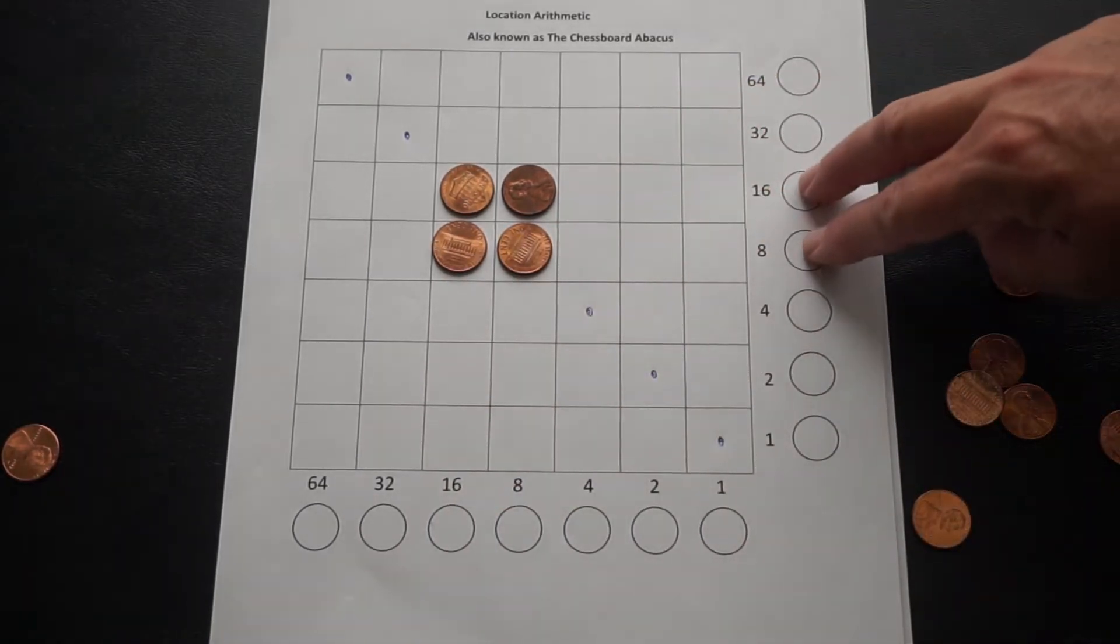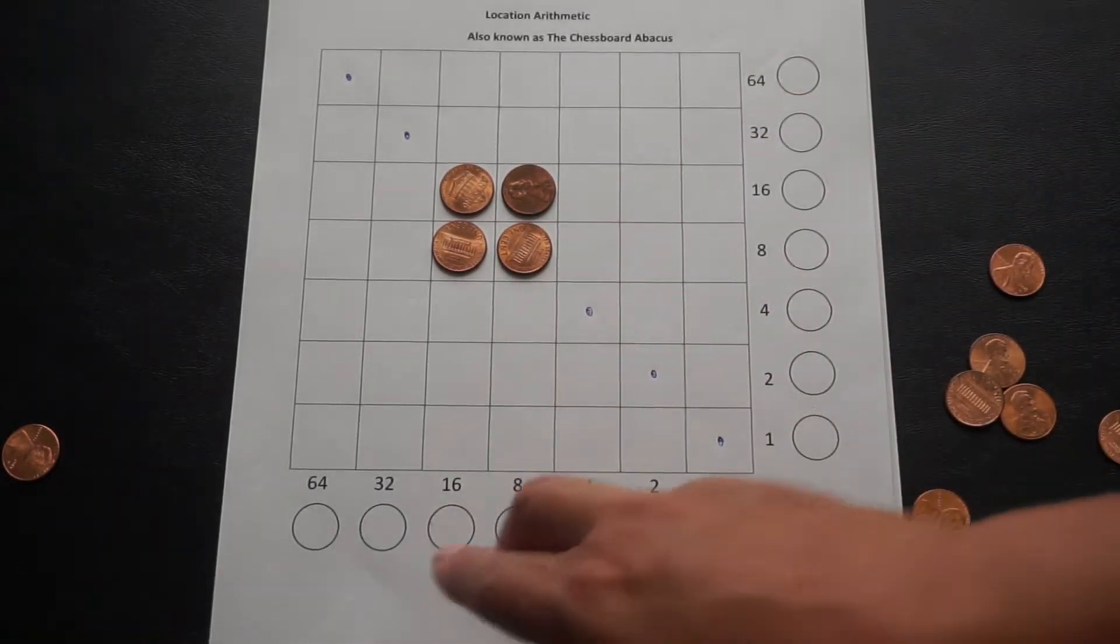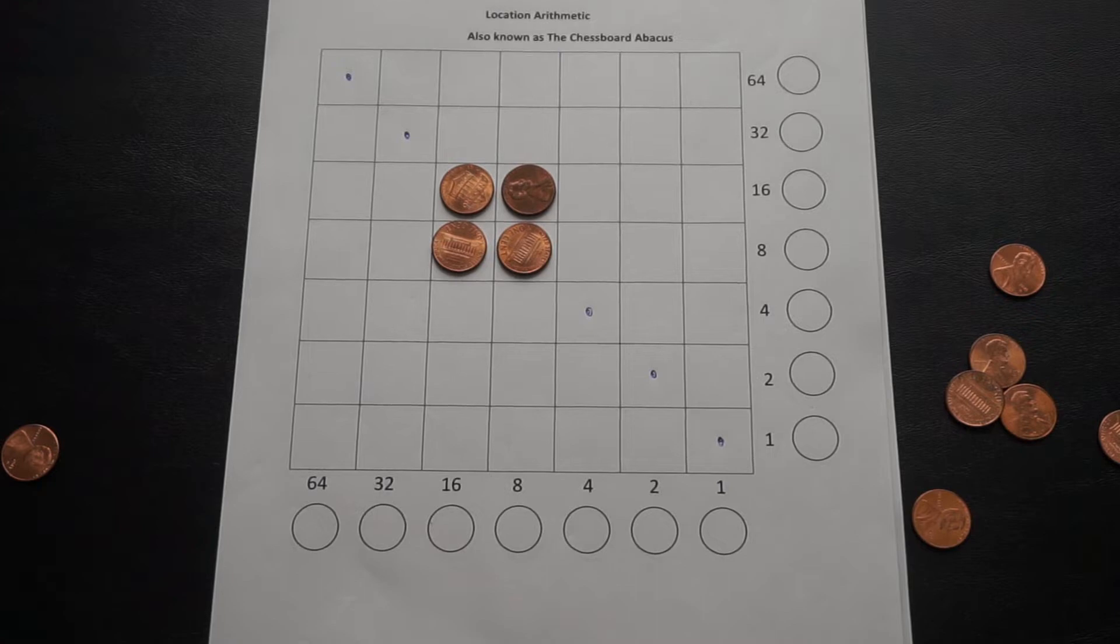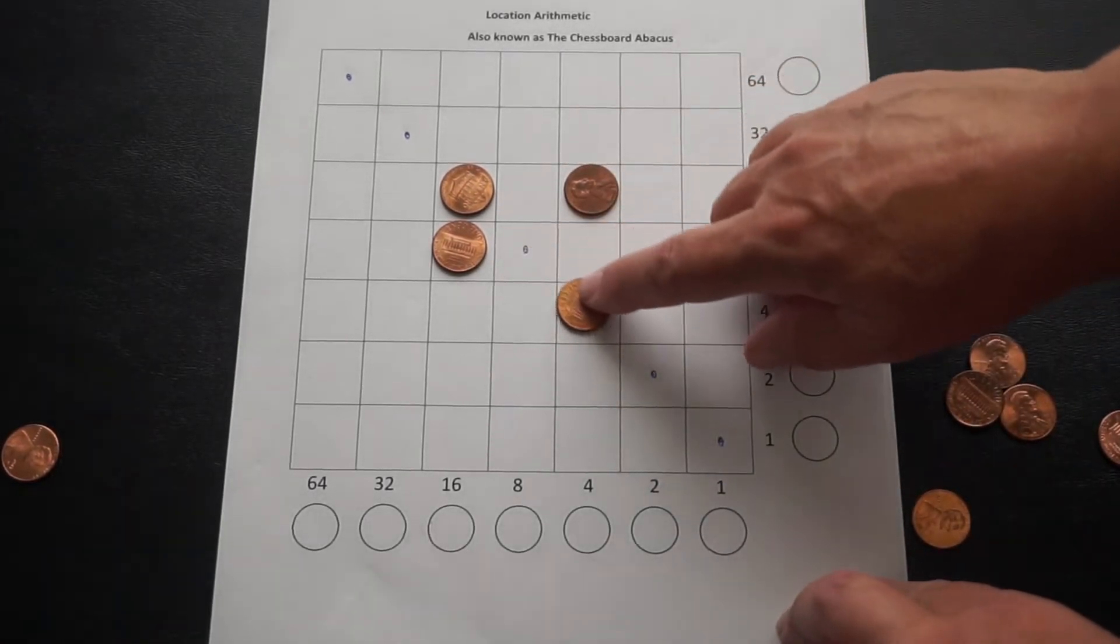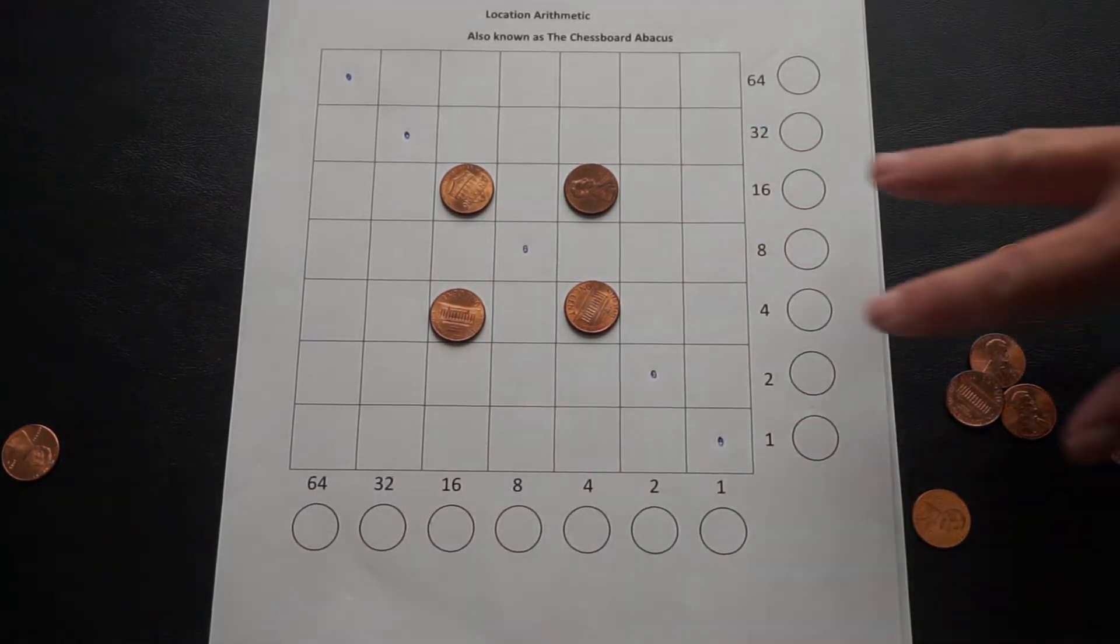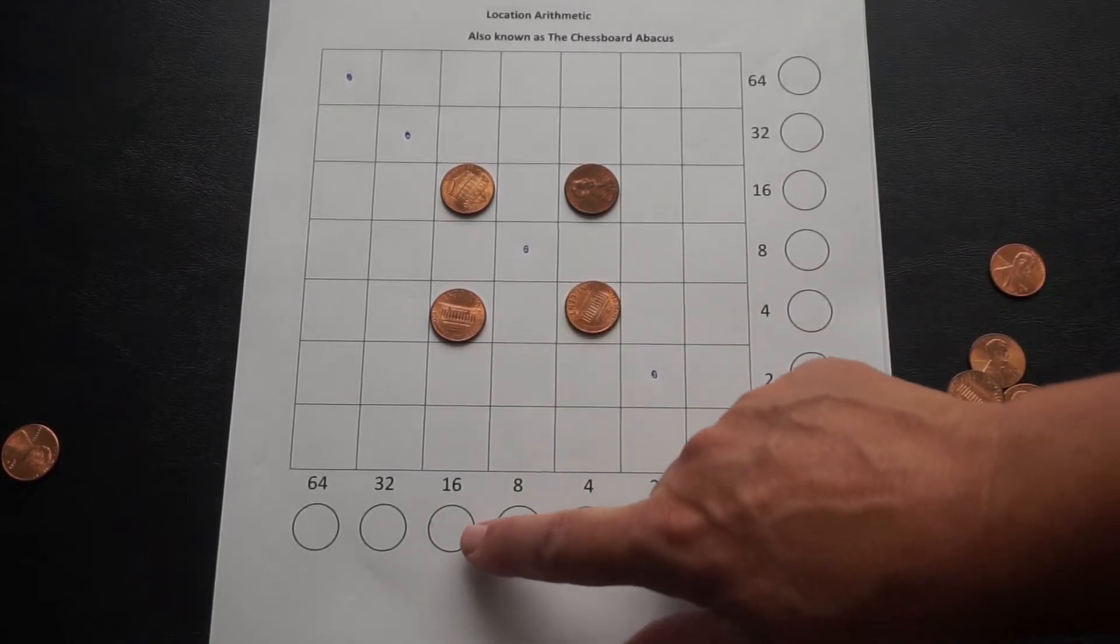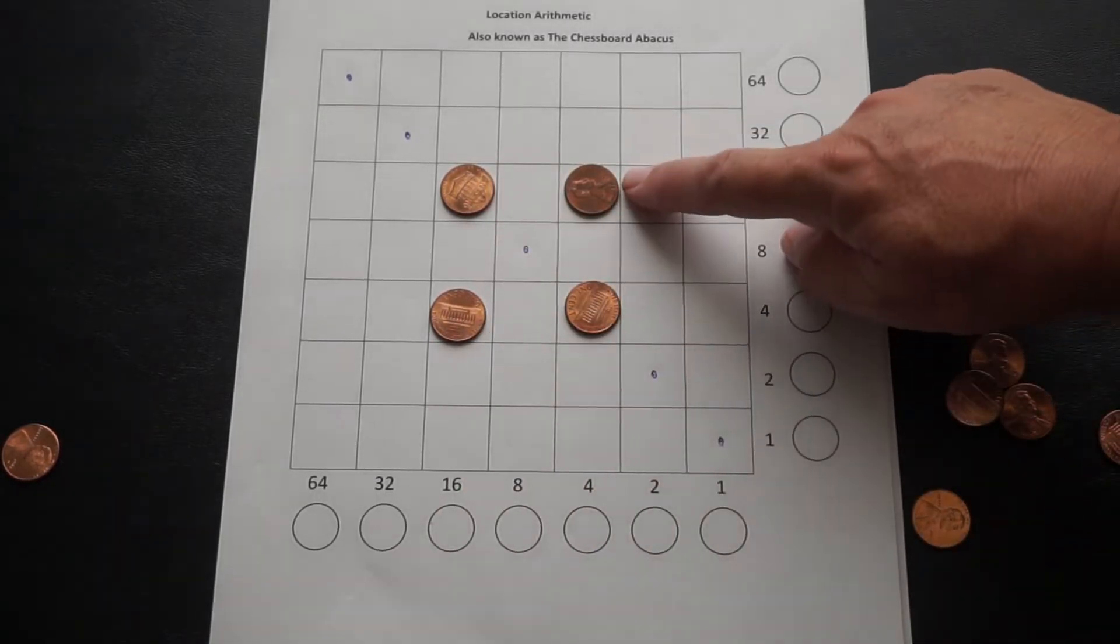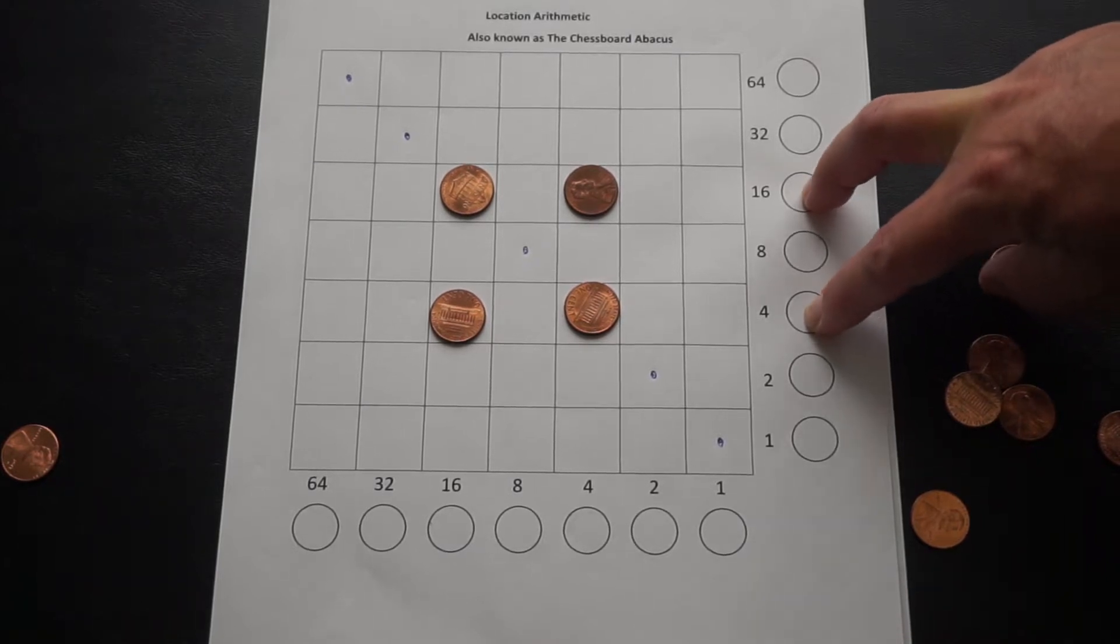So here we have 24, 16 plus 8, times 24. So it needs to look like a square. Now it doesn't have to be all pushed together like that. We can actually have a square where there's some space between the pieces. So this one represents 20 times 20, because we're in the 16 column and the 4 column. Similarly with the rows, and 16 plus 4 is 20.